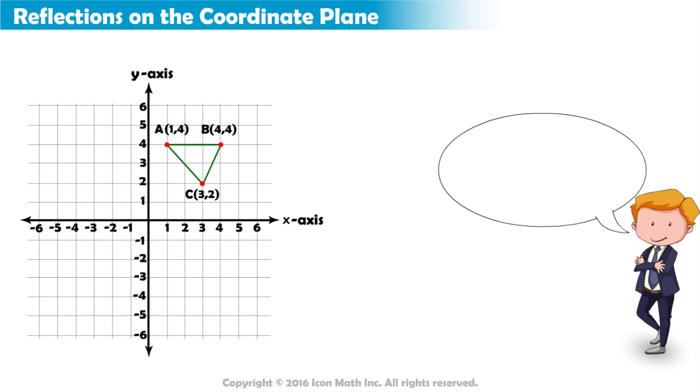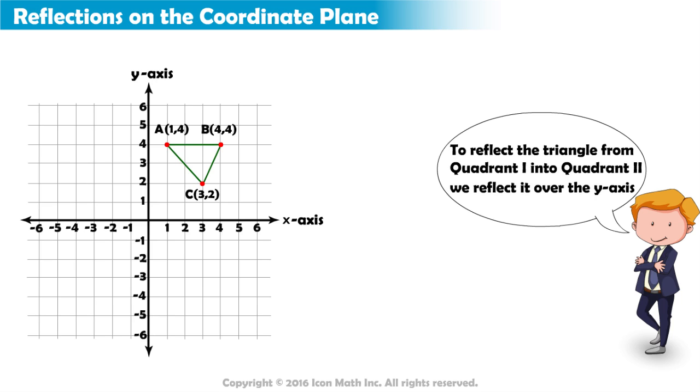If we wanted to reflect this triangle from quadrant 1 into quadrant 2, we would be reflecting it over the y-axis. Each point will be the same distance away from the y-axis as the original point.